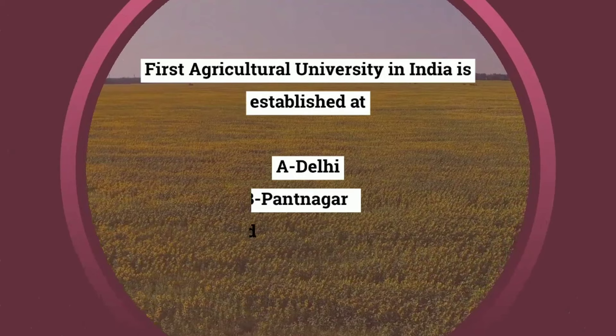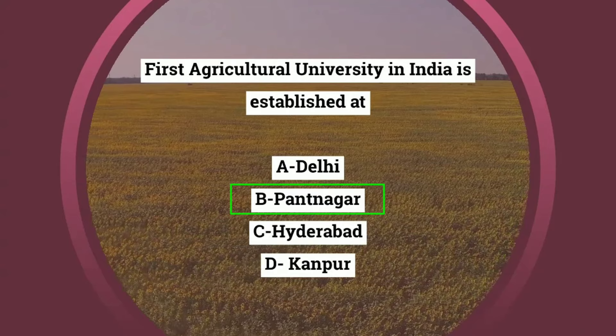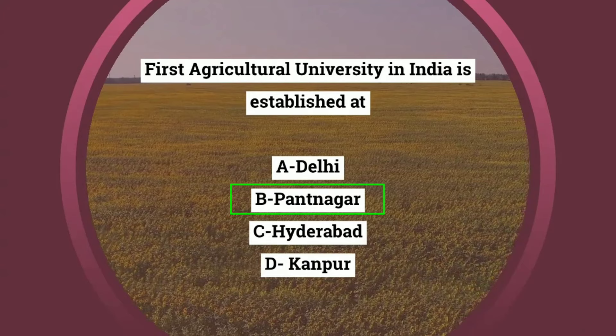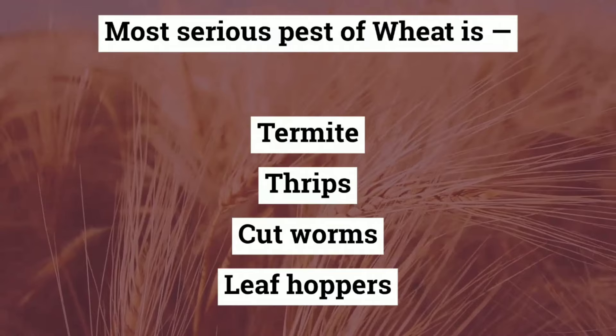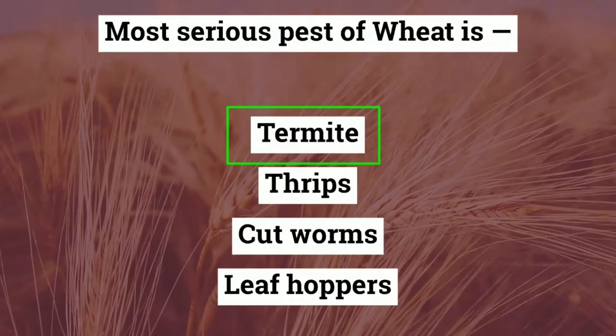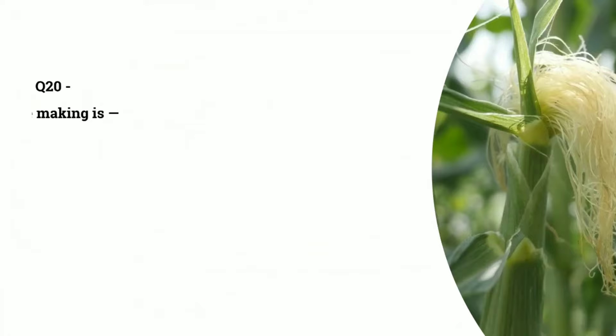Question number 18: the first agriculture university in India was established at which location? Options are Delhi, Pantnagar, Hyderabad, or Kanpur. The correct answer is Pantnagar. G.B. Pant University was inaugurated by Jawaharlal Nehru on 17th November 1960. Question number 19: the most serious pest of wheat is termites. Termites damage the crop soon after sowing and sometimes near maturity, causing the damaged plants to dry up completely and die.